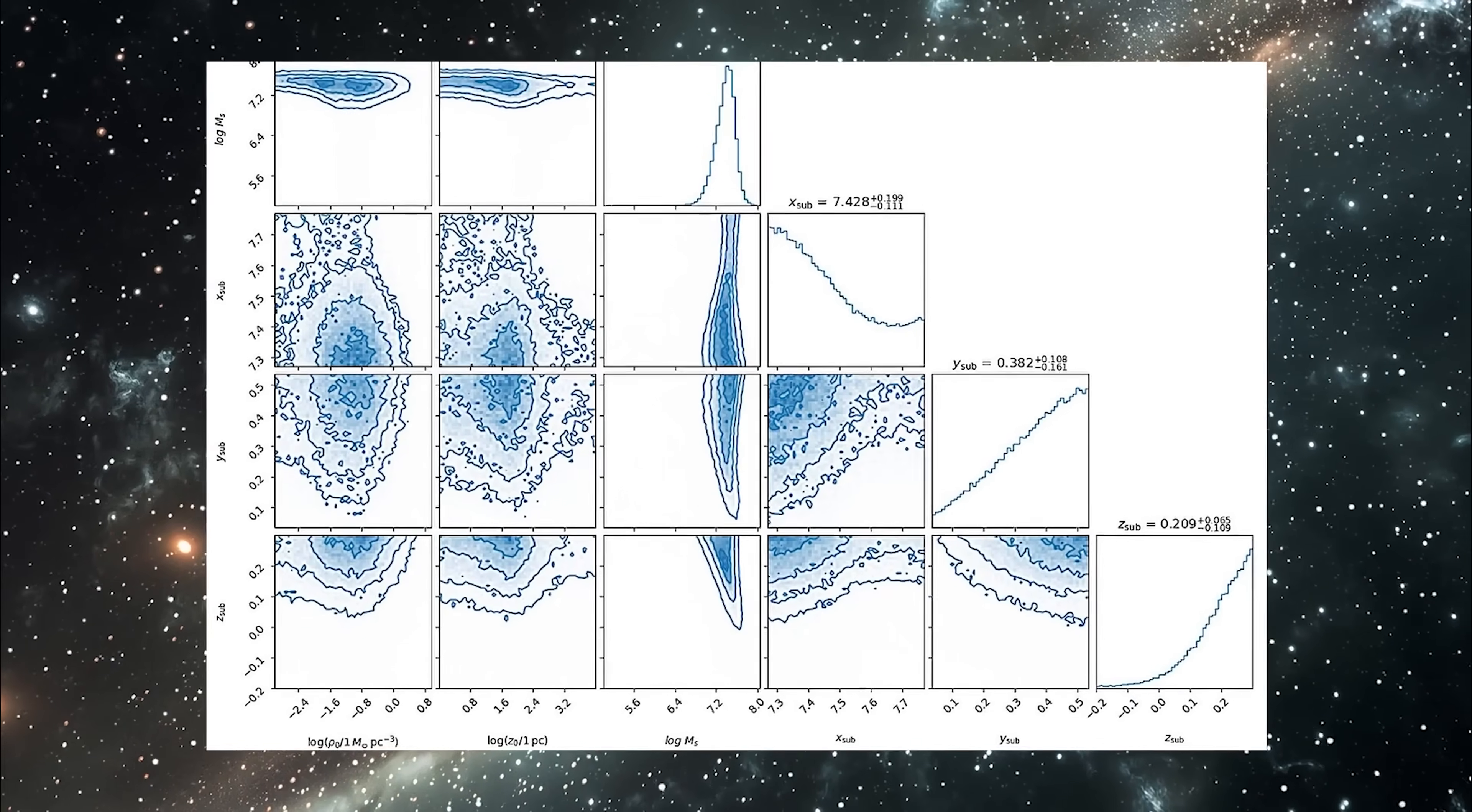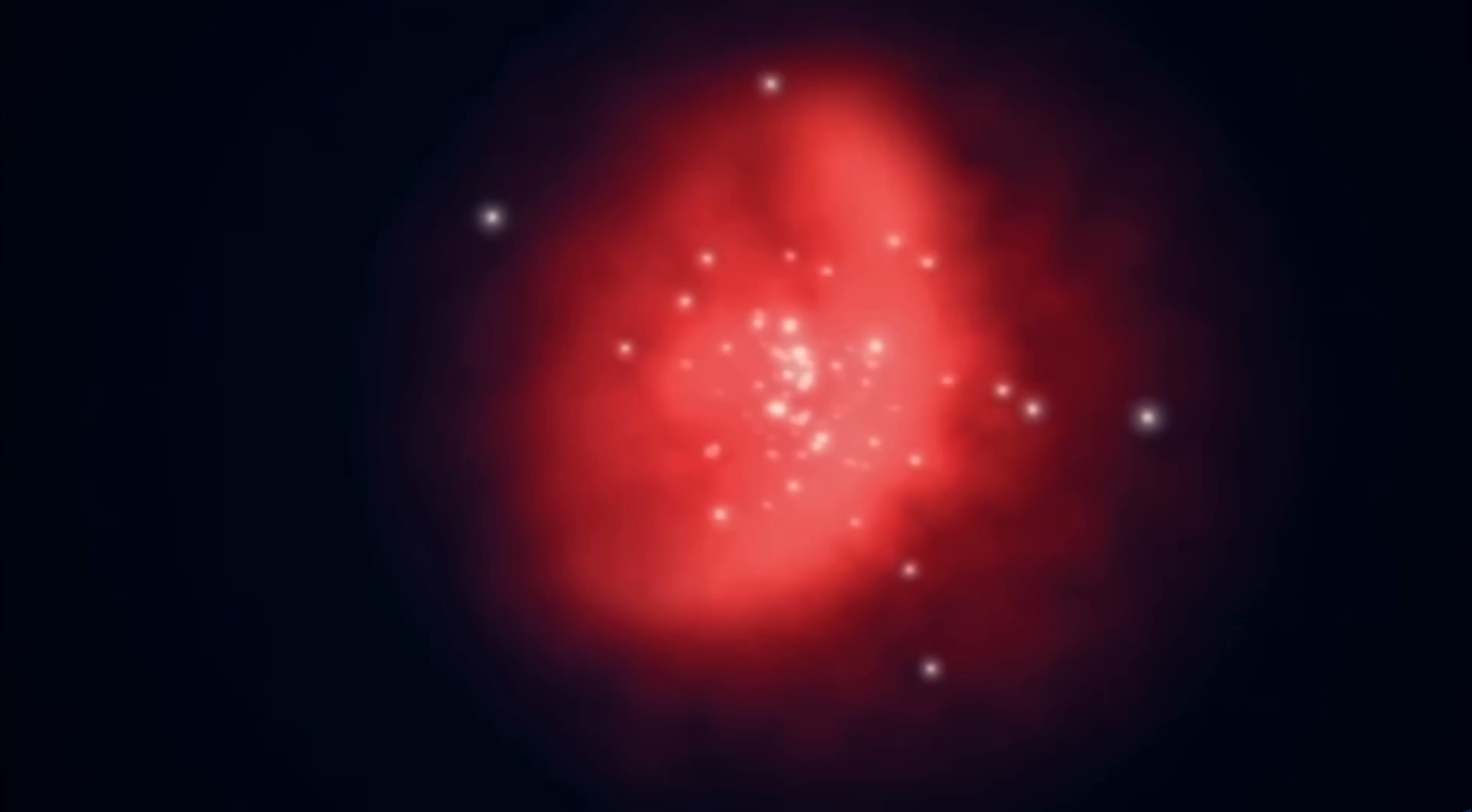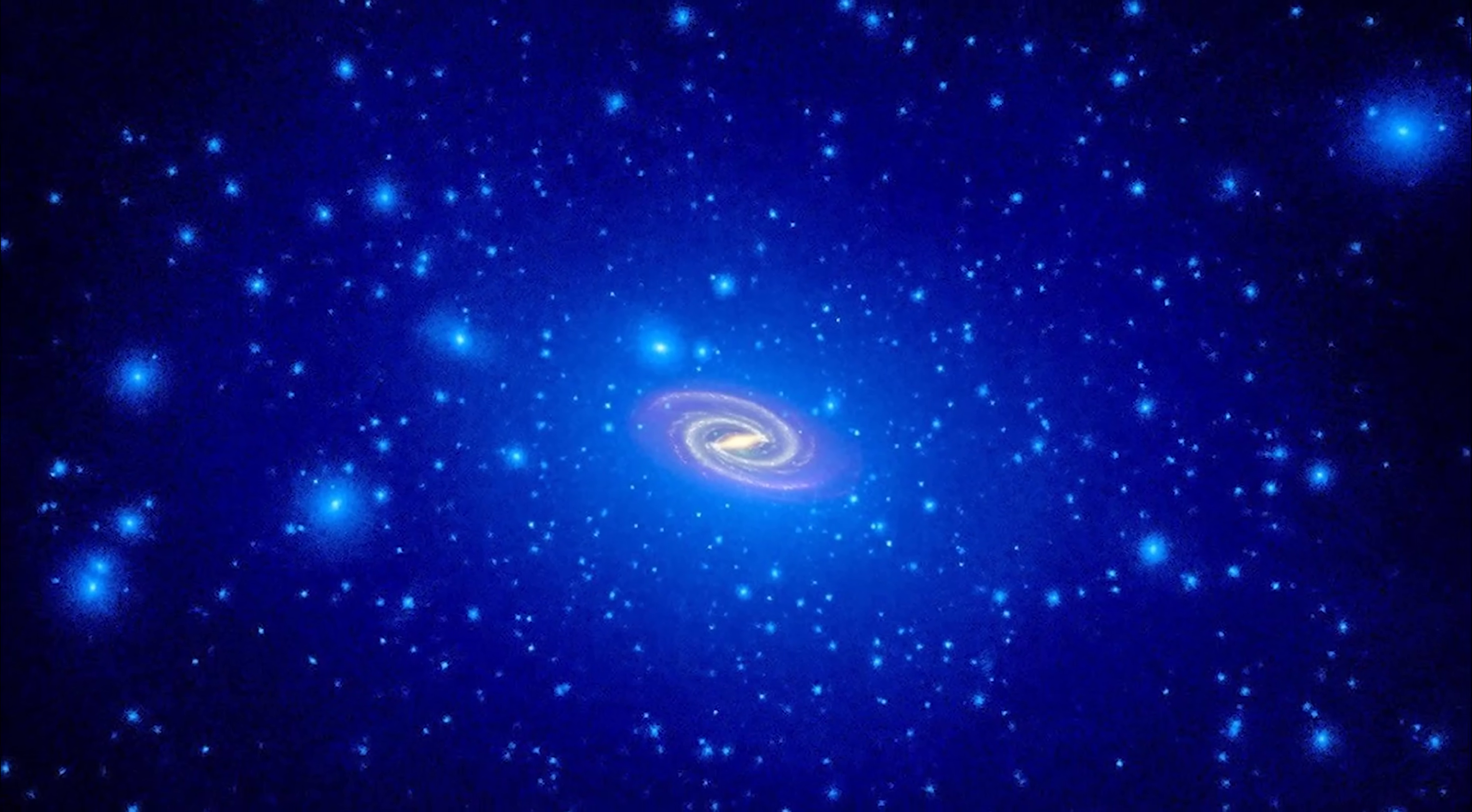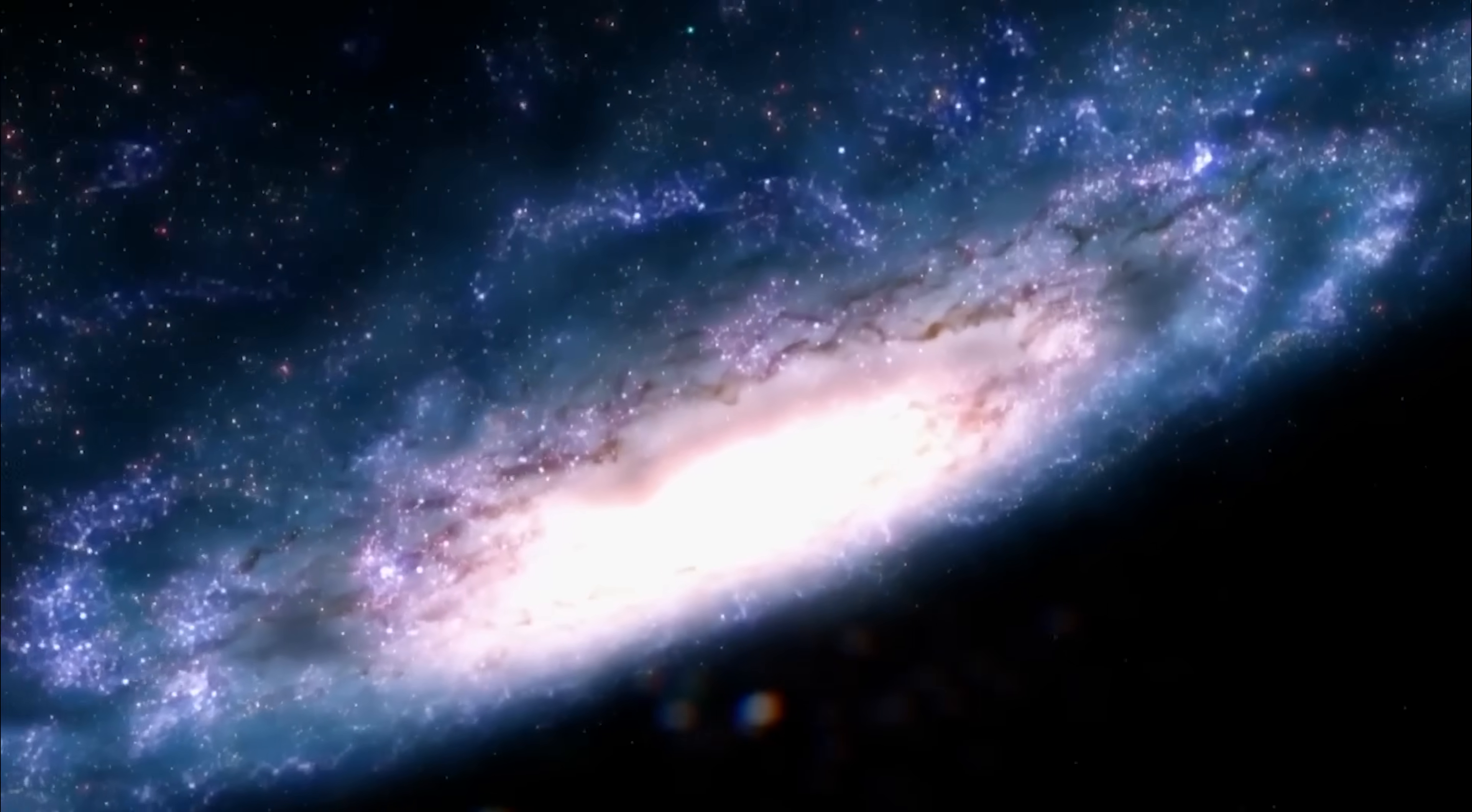If confirmed, it would be a groundbreaking find. Think of subhalos as clumps of dark matter sprinkled throughout the galaxy, a bit like chocolate chips in a cookie or raisins in raisin bread. Together, these clumps form the dark matter halo that prevents the stars and gas of the Milky Way from flying apart. Subhalos are a cornerstone of dark matter theory and are predicted to be common in galaxies the size of ours.